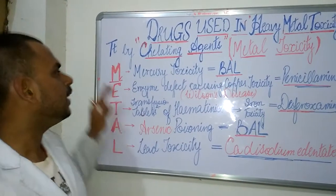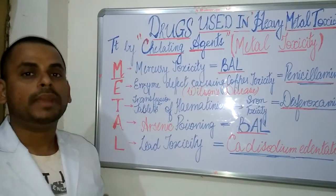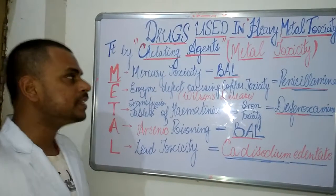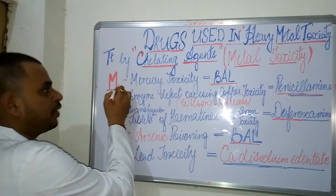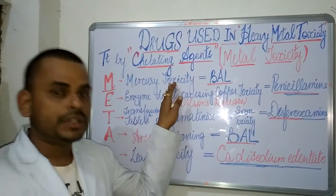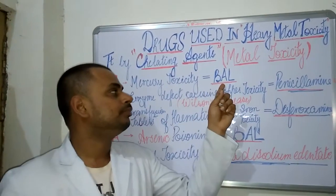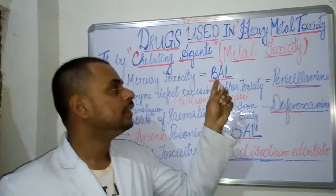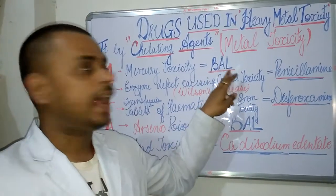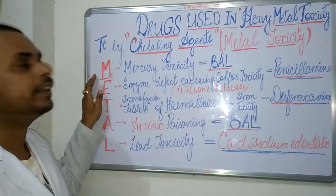Looking at the alphabets of METAL, we can identify the different metal toxicities. The first letter M corresponds to mercury toxicity. The drug of choice for mercury toxicity is British anti-lewisite, abbreviated as BAL.